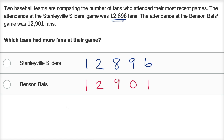The way I like to compare numbers is to go to the largest place value first and compare. They both have one 10,000, so they have the same number of 10,000s. They also have the same number of thousands. But when we get to hundreds, Benson Bats has more hundreds than Stanleyville Sliders. It doesn't matter what happens in the tens and ones place if they have more hundreds.